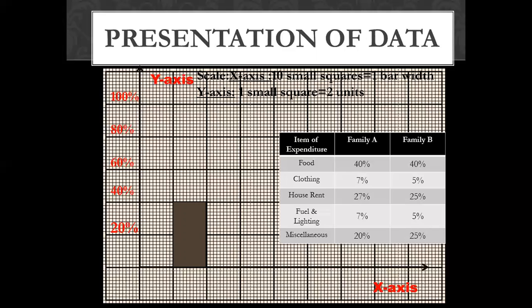Next, clothing is 7%, which means 3.5 small scales — almost 4 small scales. After that, house rent is 27%, which means 13.5 small scales. Then fuel and lighting is also 7%, which is 3.5 small scales — the same size. After that, miscellaneous is 20%, which is 10 small scales.